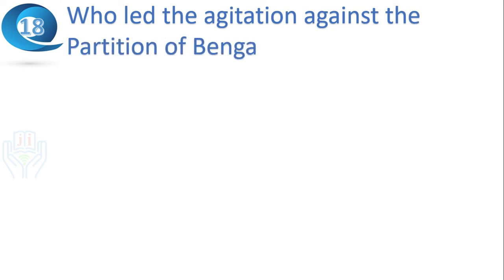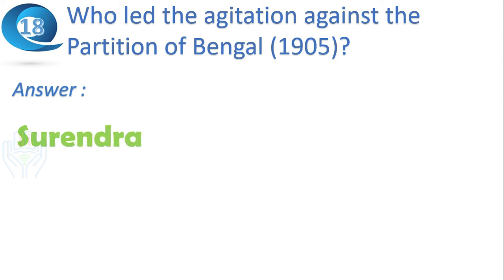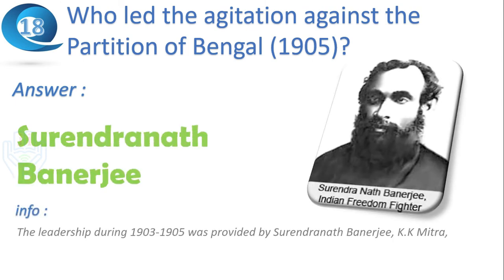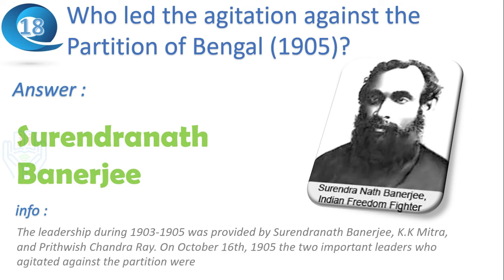Next question: who led the agitation against the Partition of Bengal in 1905? Answer: Surendranath Banerjee. The leadership of the 1903–1905 agitation was provided by Surendranath Banerjee, K.K. Mitra and Prithwishchandra Roy. On October 16, 1905, the two most prominent leaders who agitated against the partition were Surendranath Banerjee and Ananda Mohan Bose.